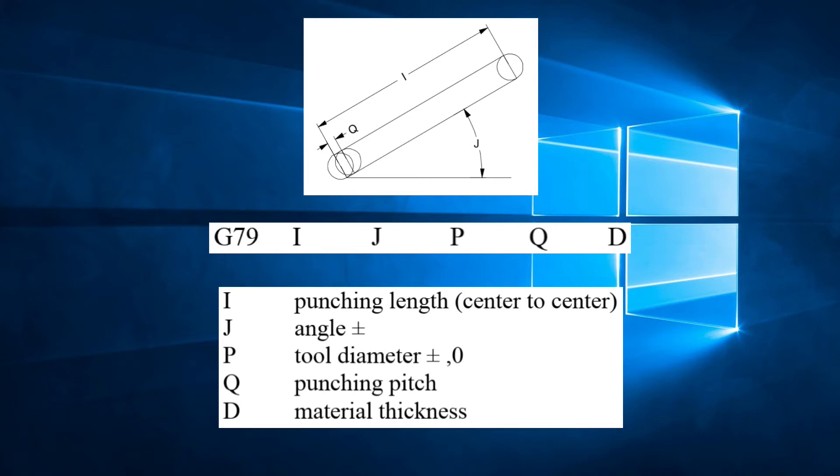We can see the parameters are exactly the same as G69, with the addition of D, which is used for specifying the material thickness.